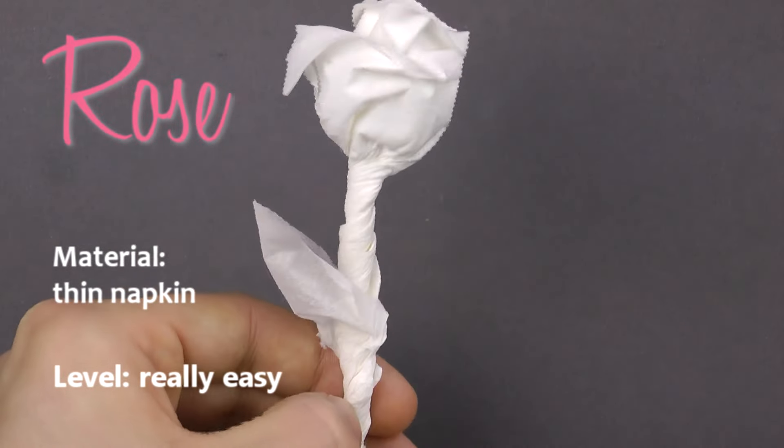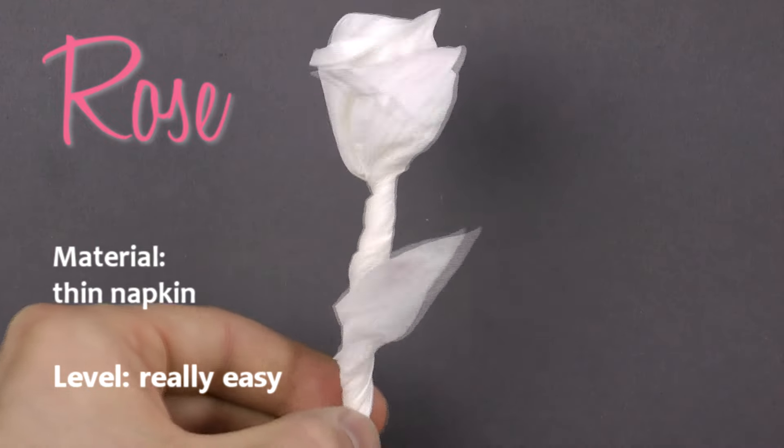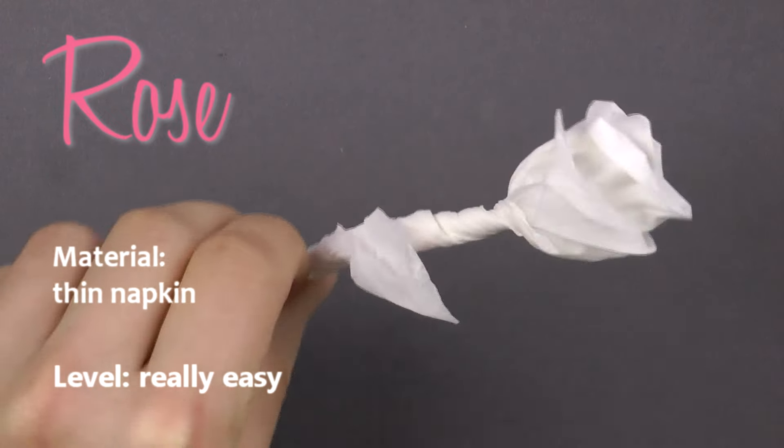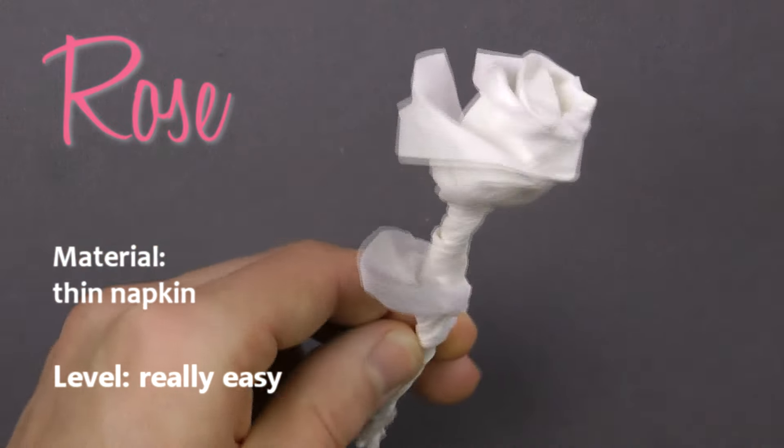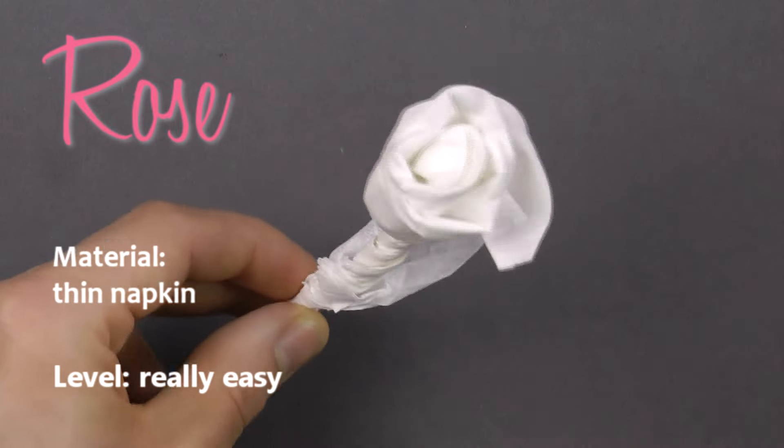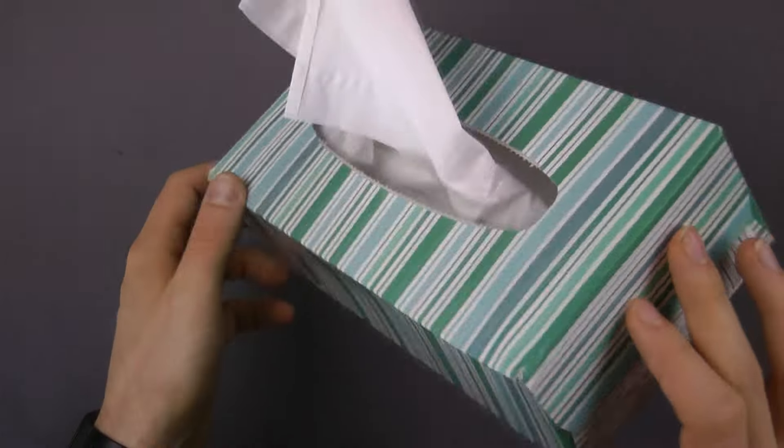Hello, dear friends of the folded sheet. It's me, Tevin, from Tevin's Origami, and today we'll fold a simple rose from a thin napkin. It's really easy to do, let's get right at it. You can use any thin, cheap napkin.